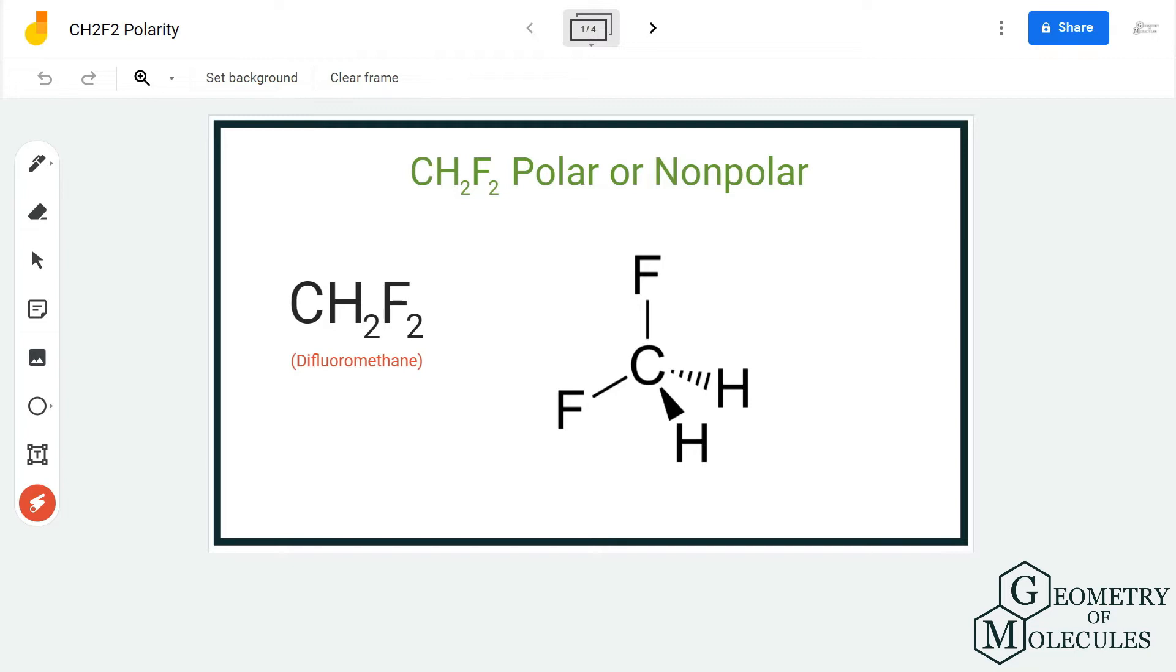going to look at its Lewis structure, followed by its shape, and then we are going to check the electronegativities of the atoms. So if you look at its Lewis structure, you can see that a carbon atom is forming bonds with two hydrogen atoms and two fluorine atoms.